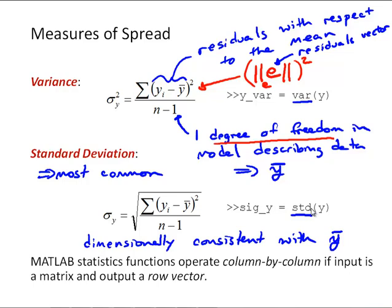Like I said before, MATLAB statistics functions can input a matrix or a vector as the input argument for the data. If it is a matrix, the function operates column by column and the output is a row vector.